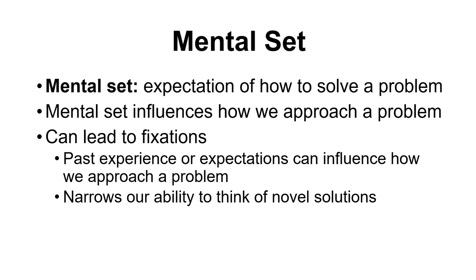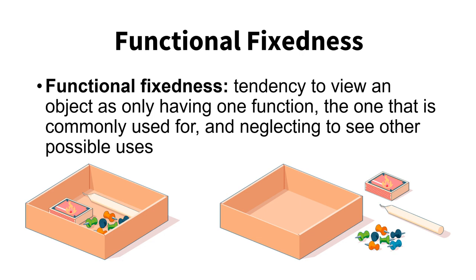A concept similar to fixations is functional fixedness — a tendency to view an object as only having one function, the function it's commonly used for, and failing to see other possible uses. The textbook example presents a box holding tacks, a set of matches, and a candle. Participants are asked to use these tools to prevent the candle from dripping wax onto the table when lit. Most people find a solution involving pinning the candle to a nearby board and having it drip wax downward into the box.